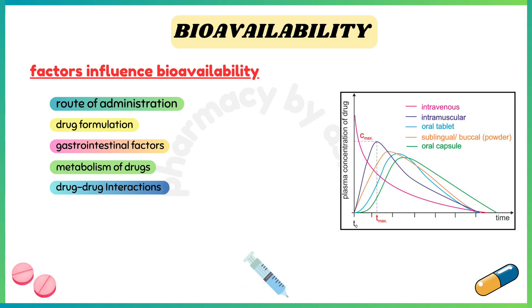Gastrointestinal factors such as gastric emptying time, intestinal motility, and pH levels in the stomach and intestines can affect absorption. Metabolism: presystemic metabolism, also known as first-pass metabolism in the liver and gut wall, can reduce bioavailability for some drugs.